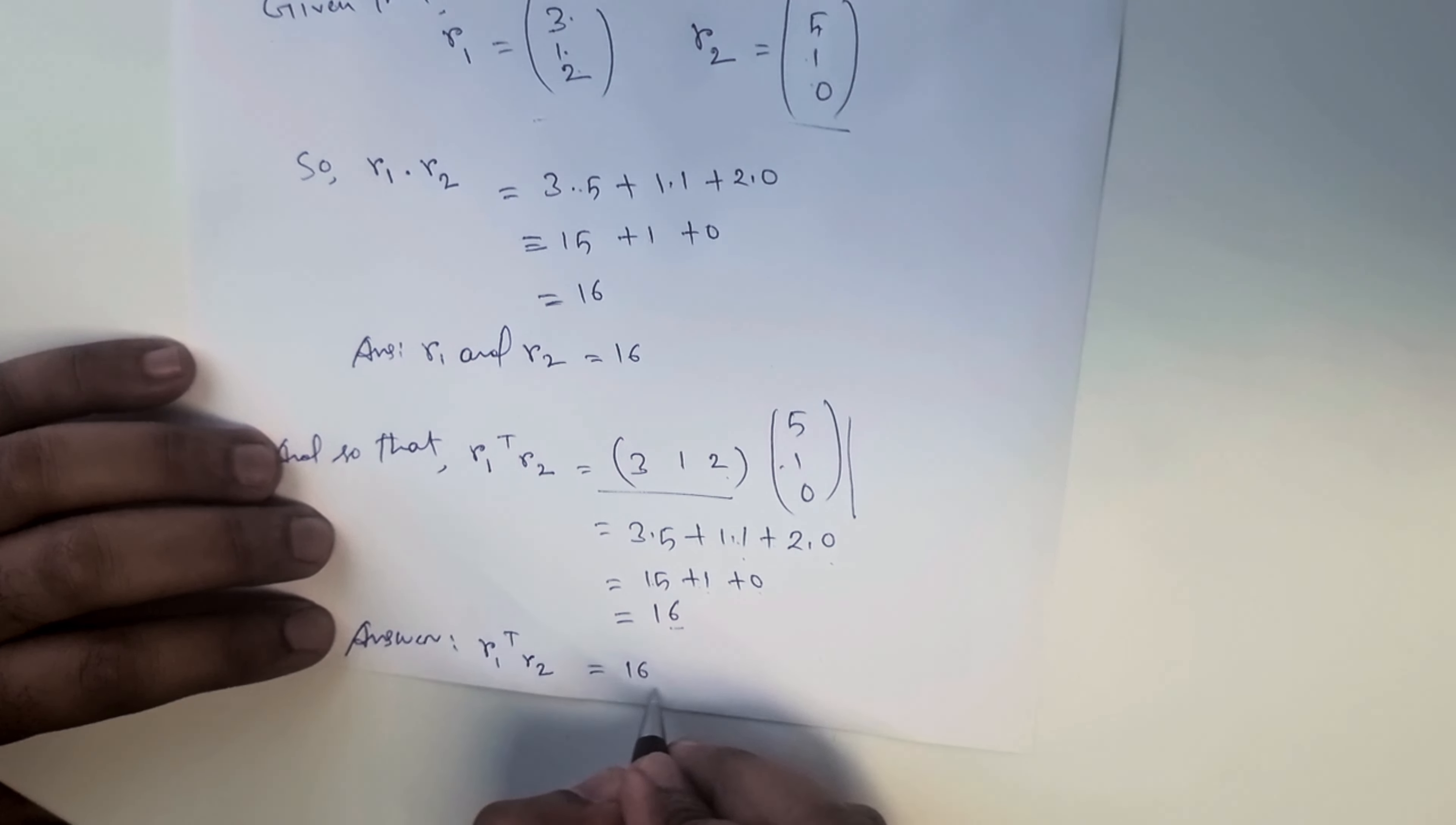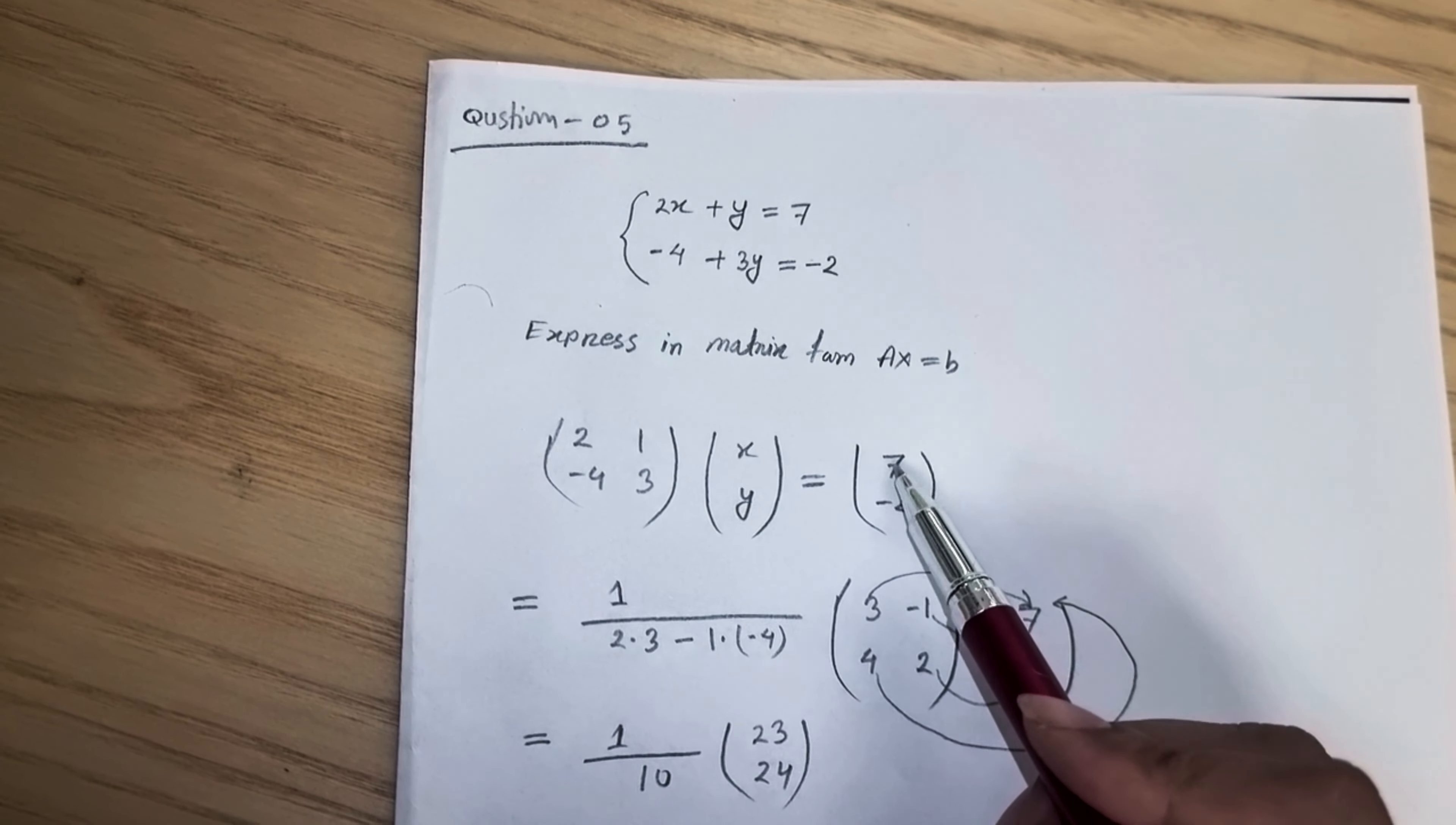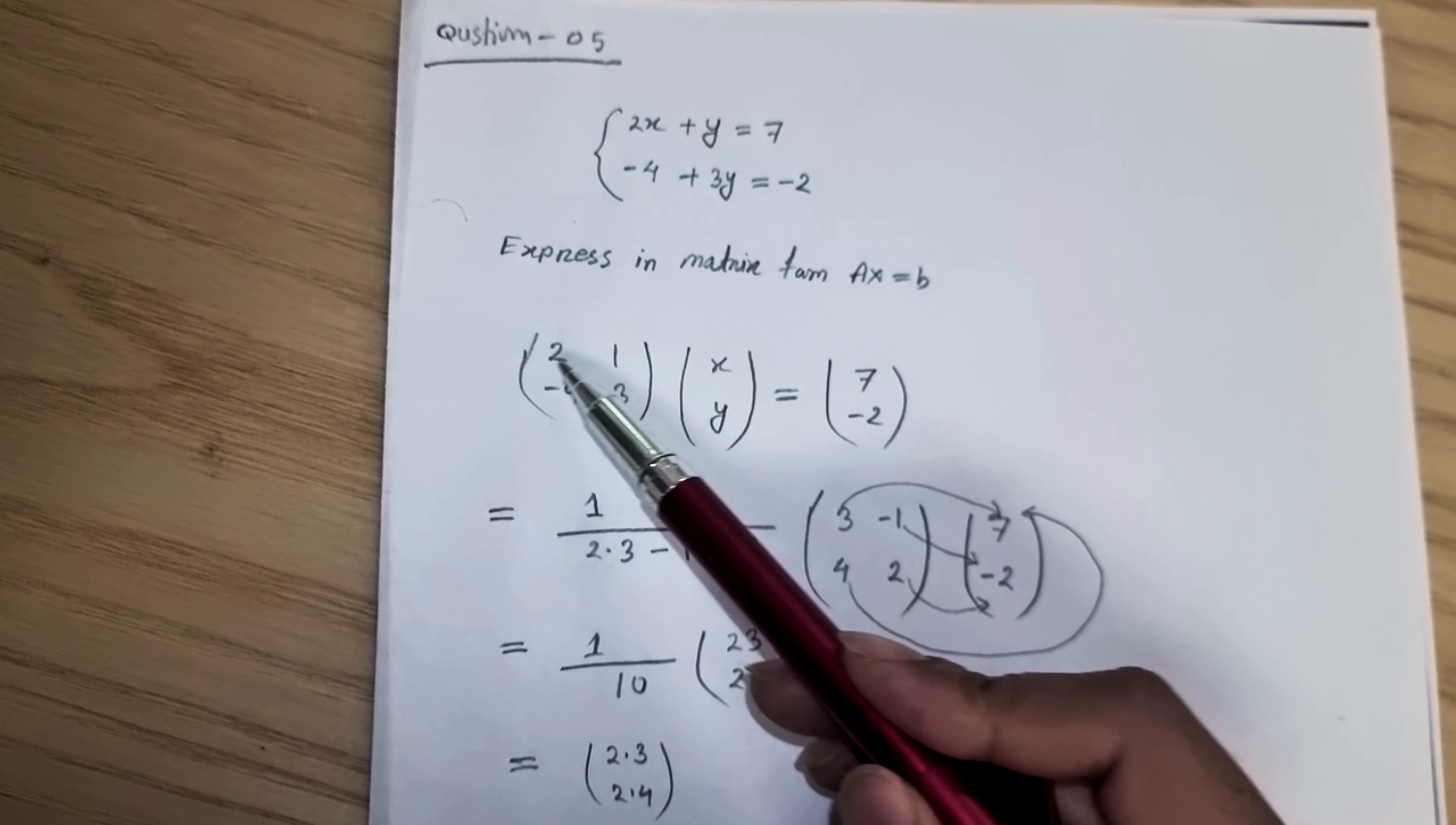So here is our question: 2x plus y is equal to 7 and minus 4x plus 3y is equal to minus 2. So we can write 2 and minus 4, and we can separate x and y here, then we can put the values equal to 7 and minus 2. This is our value.